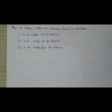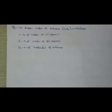In three moles of C2H6, calculate: first, the number of moles of carbon atoms; second, the number of moles of hydrogen atoms; third, the number of molecules of C2H6.